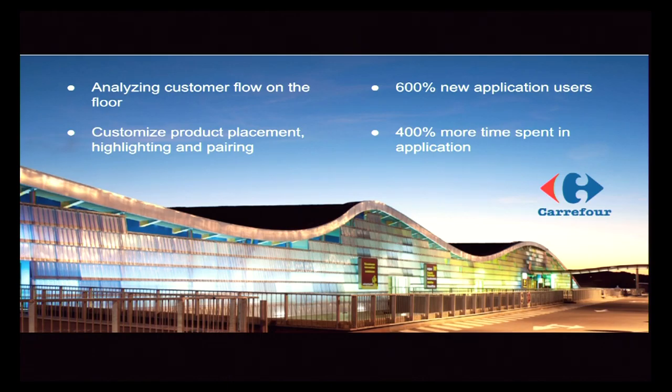Carrefour is a large grocery chain — about a $20 billion business — and they have beacons in many of their properties, including their showcase in France. As a grocery store, they have beacons installed, and customers use their app which tracks where they go through the store. The upside for consumers is pairing notices — for example, if you linger at the pasta shelf, they can say 'hey, this sauce is on sale,' or suggest French bread. They can make recommendations that are actually valuable, pairing products you're considering.